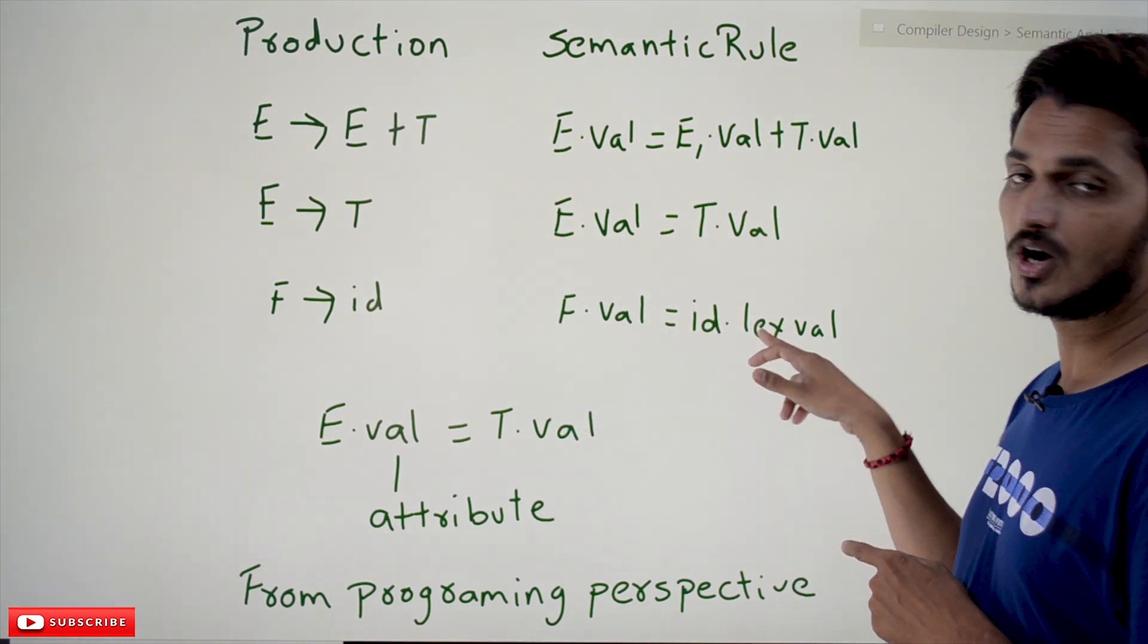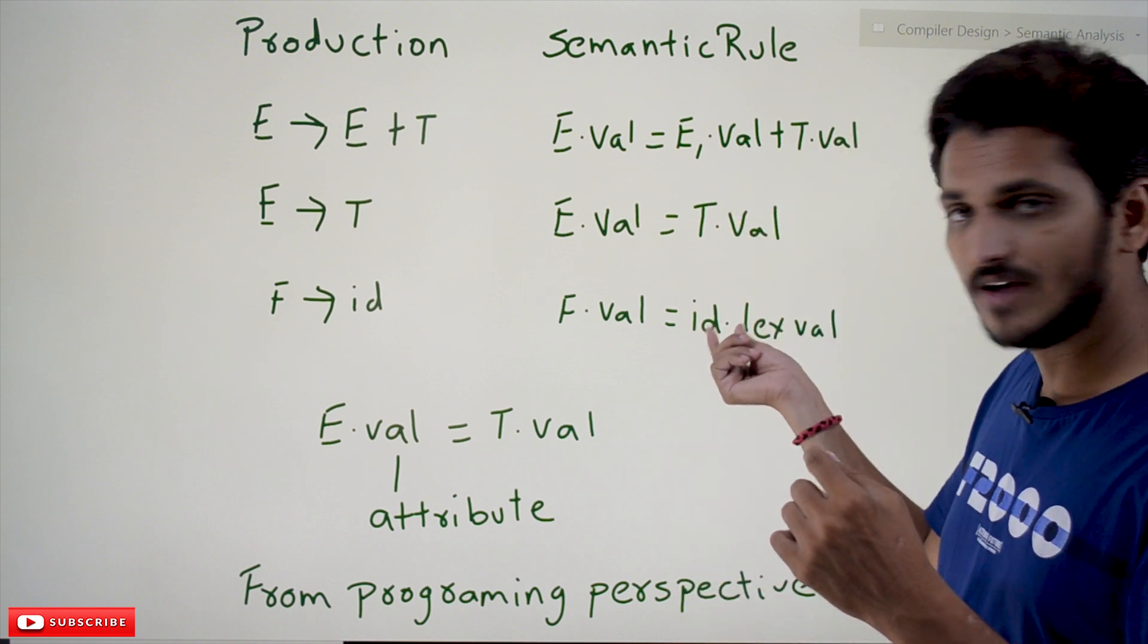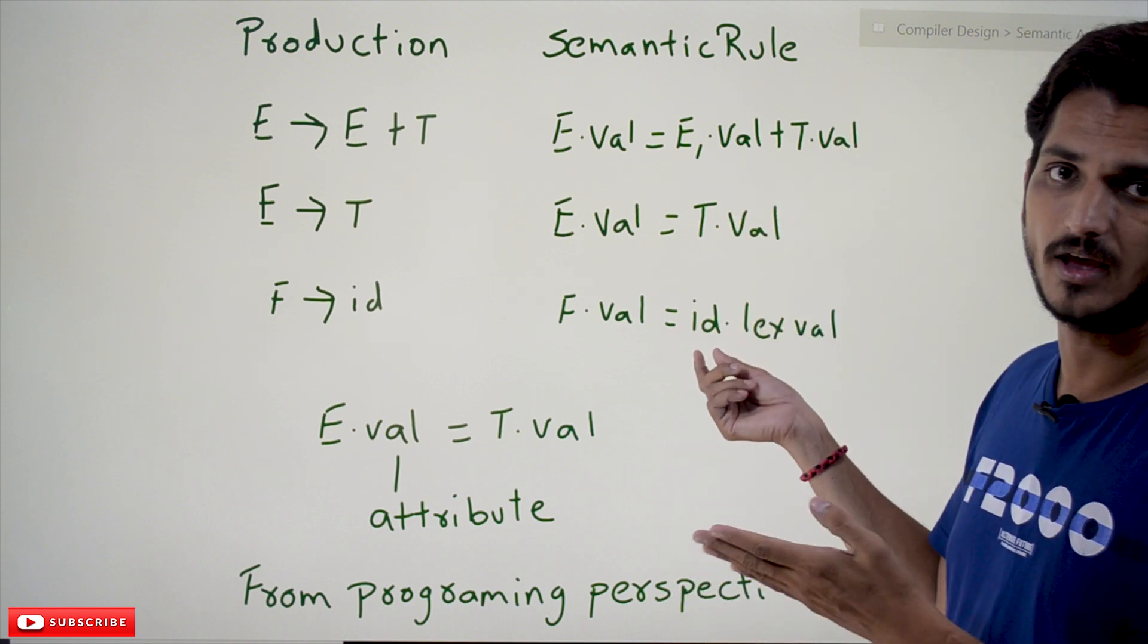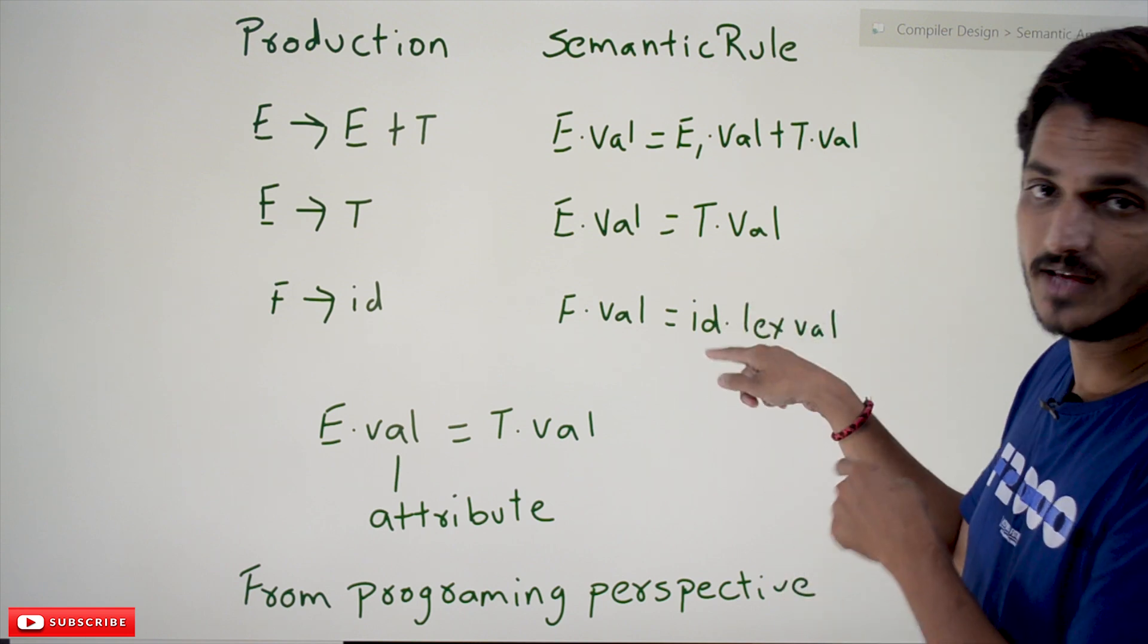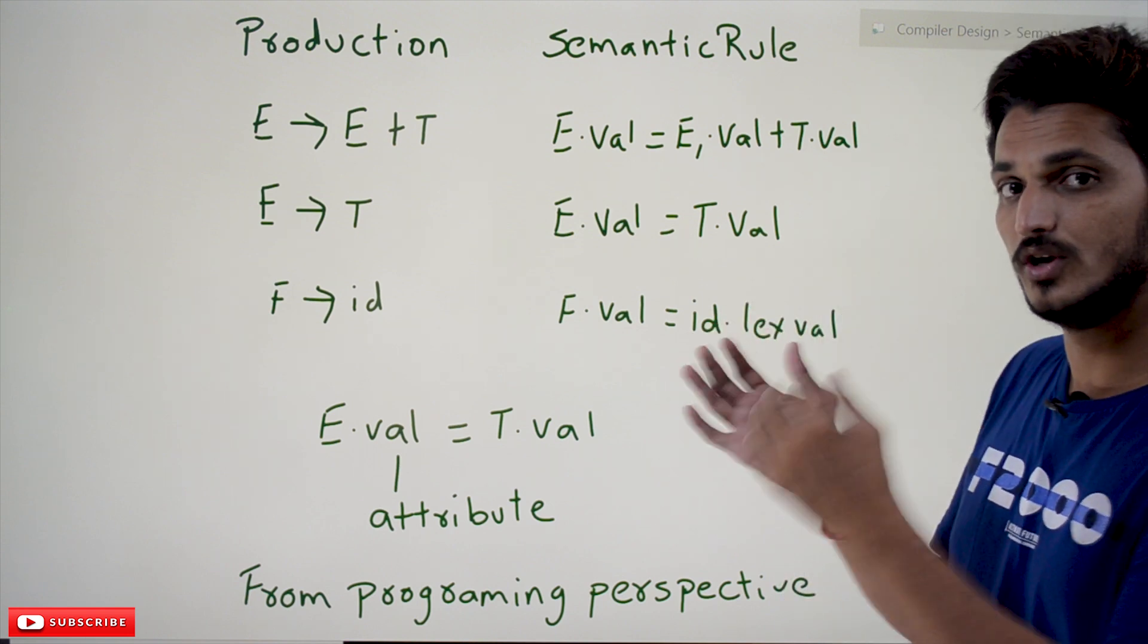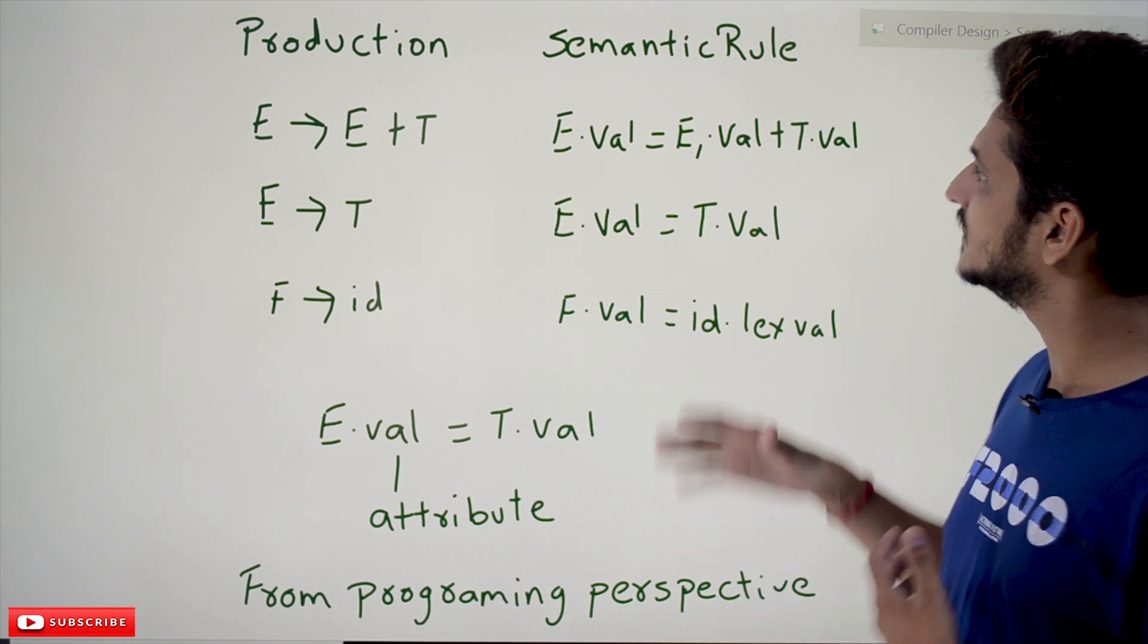F.val equals id.lexval, whatever the lexical analysis phase is going to give for the id value. For example, 2 plus 5 - the 2 is one id value. At this position for this id, what the lexical analysis phase is going to give, that is what lexval means. This is how we write the semantic rules.